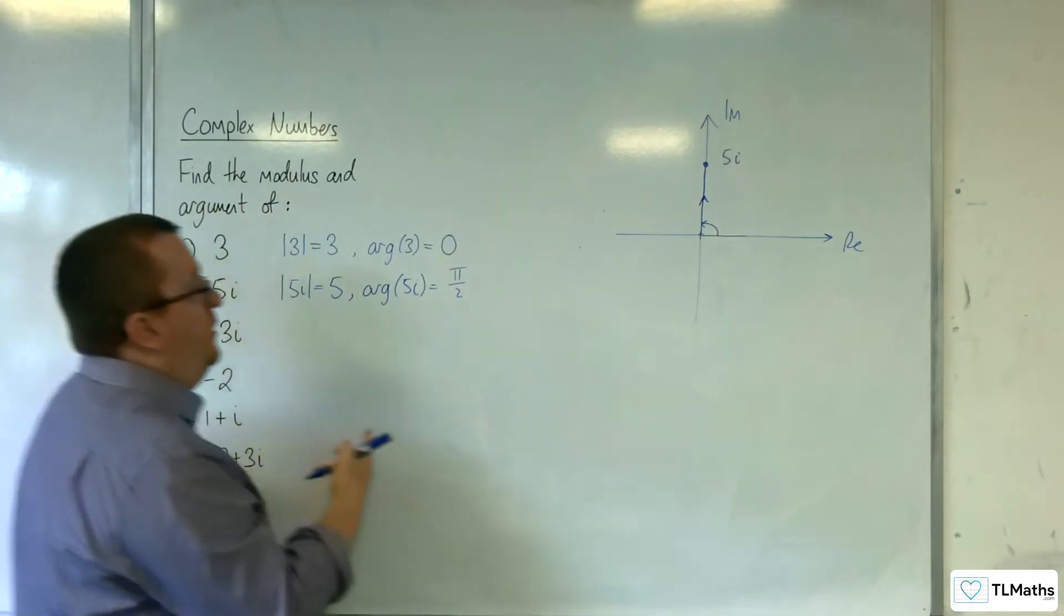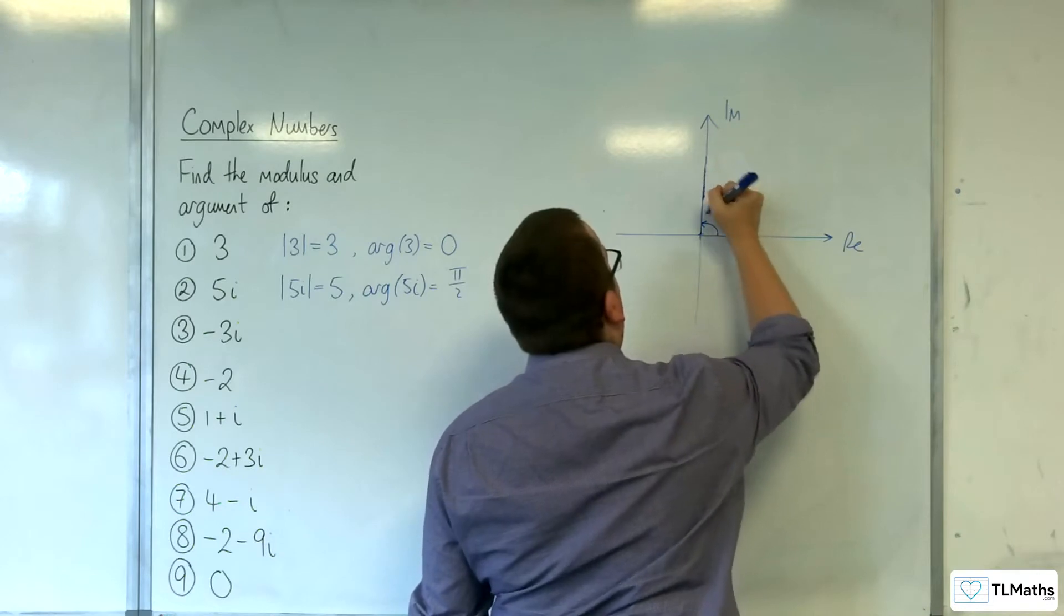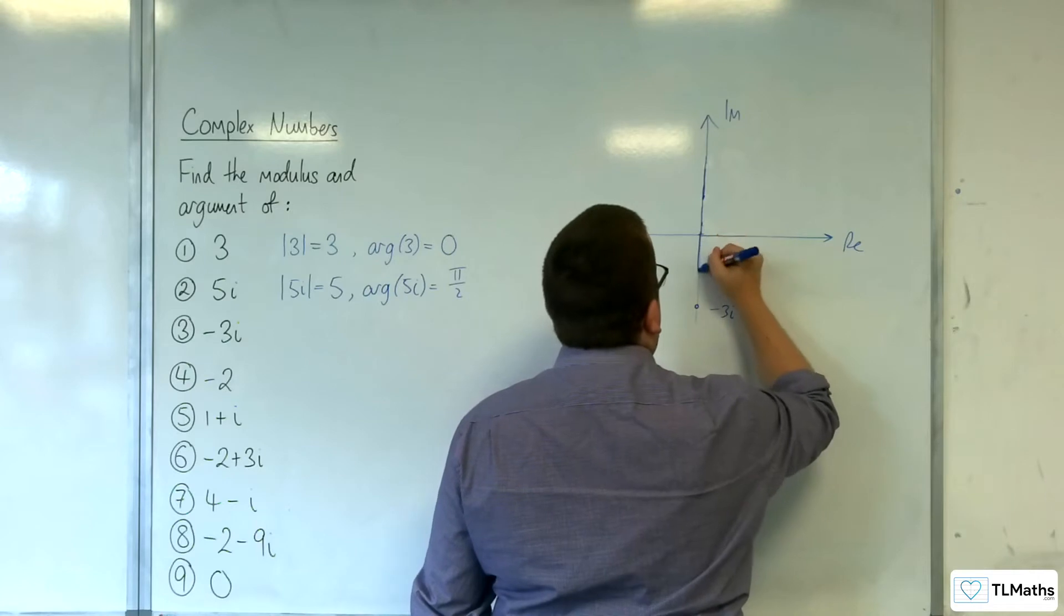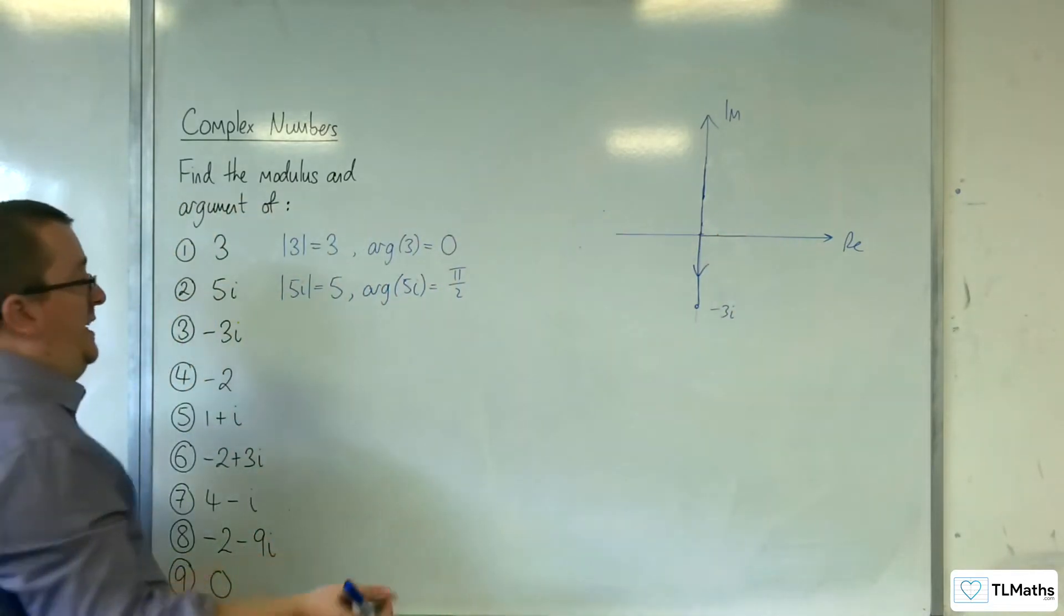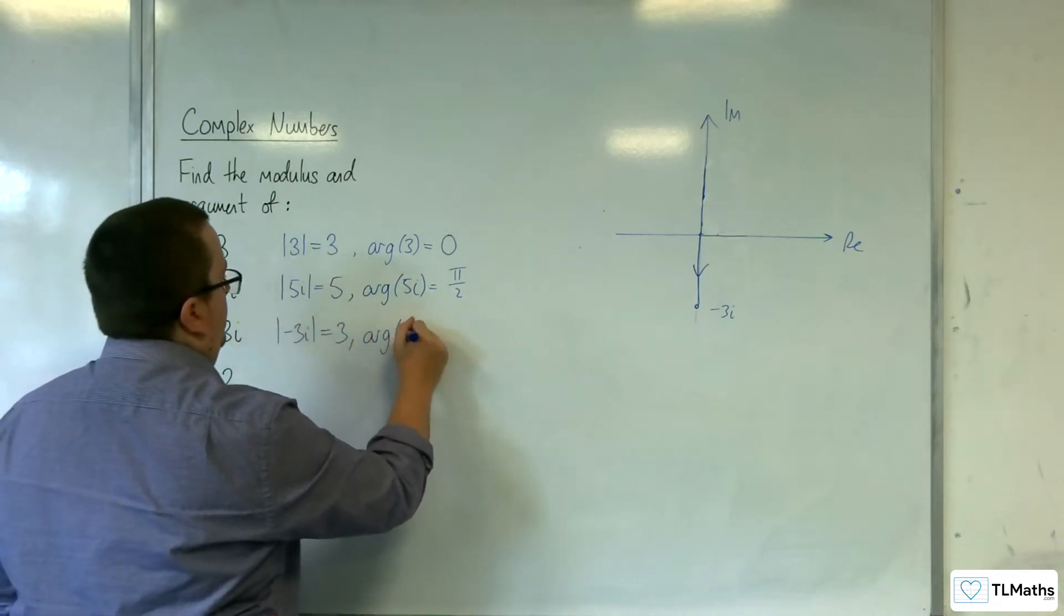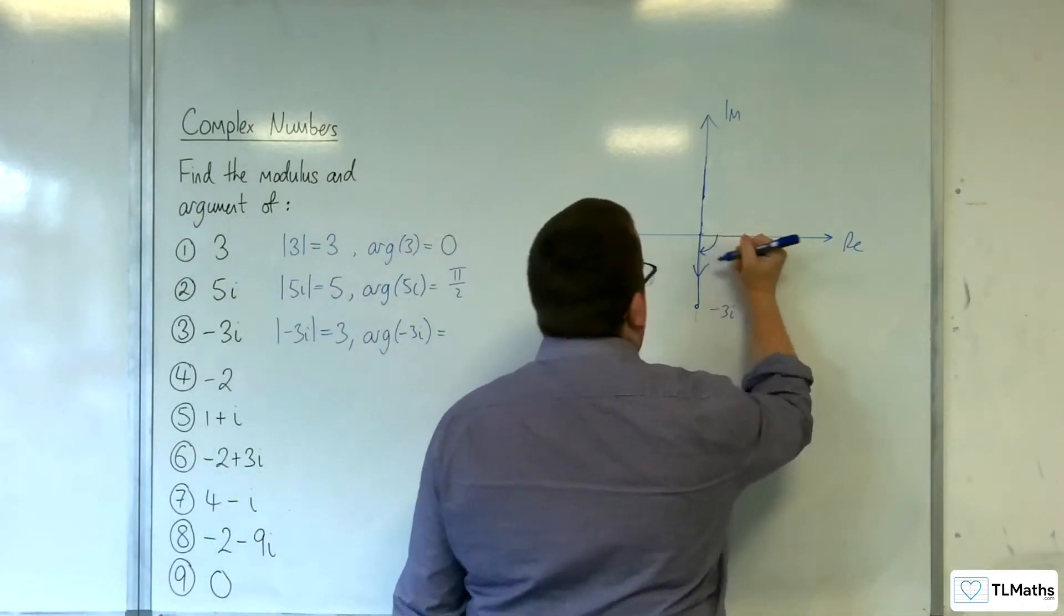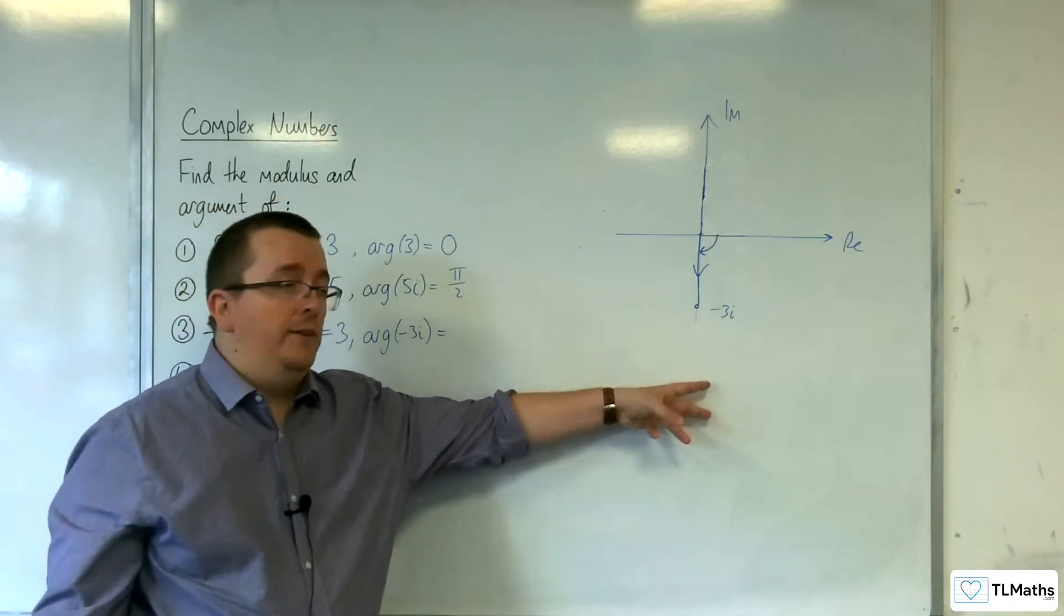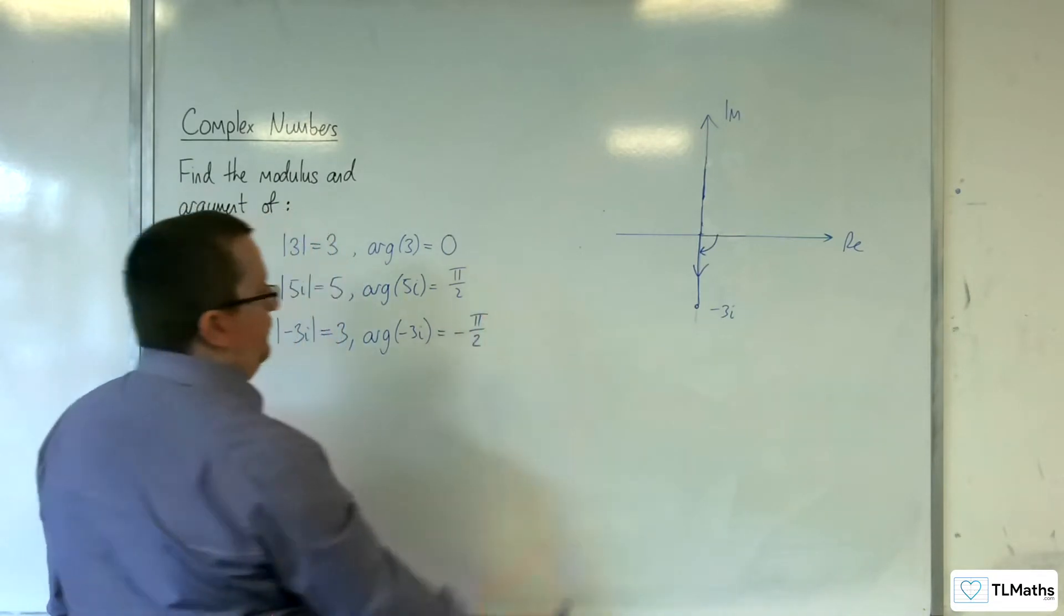Let's have a look at -3i now. So -3i is down here somewhere. Now we're going down there. Its distance from the origin is clearly still 3. The argument of -3i is this angle here, and remember, we're going to have it as negative because we're below the real axis now. And so it's going to be -π over 2.